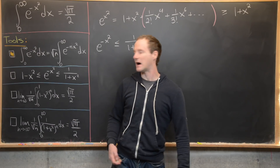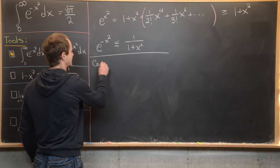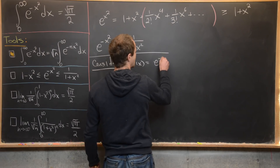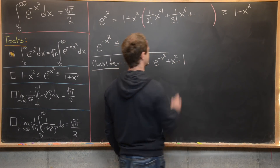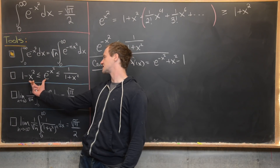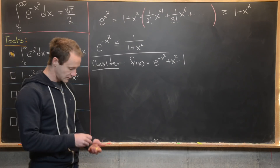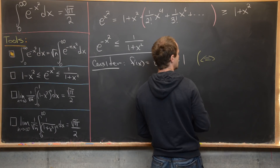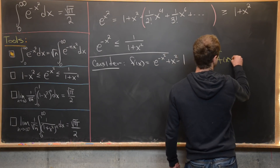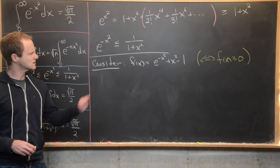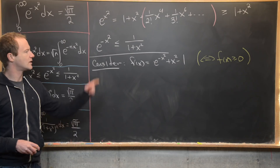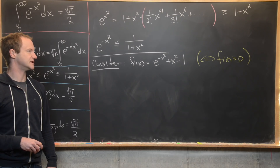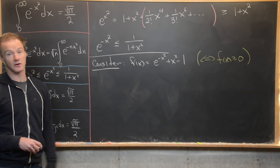For the lower bound, consider f(x) = e to the minus x squared plus x squared minus 1. This lower bound holds if and only if f(x) is always non-negative. Since f is an even function, we only need to show f(x) is greater than or equal to 0 for all x greater than or equal to 0.